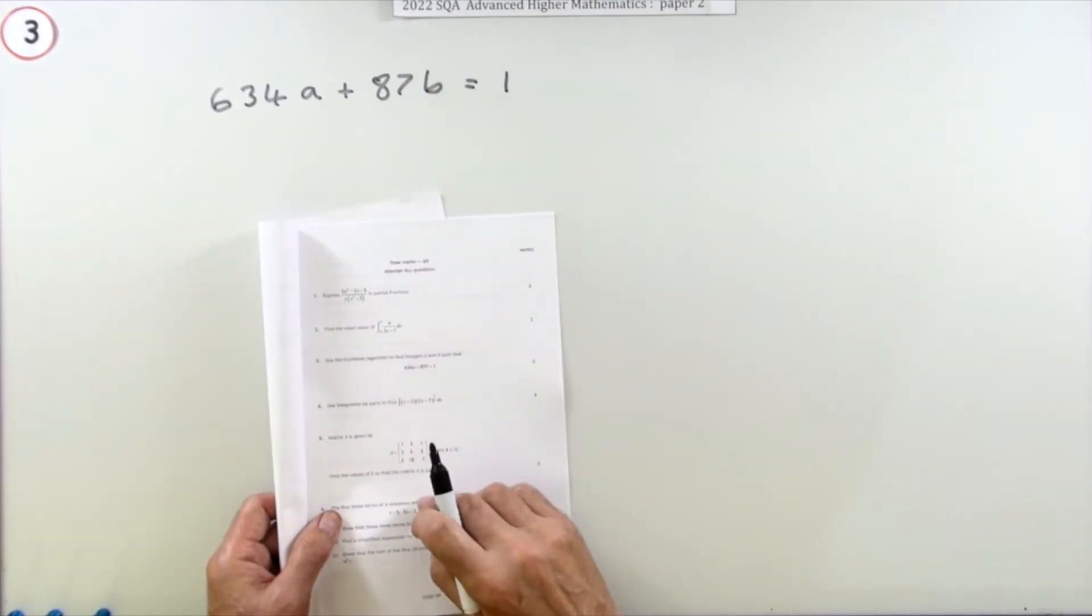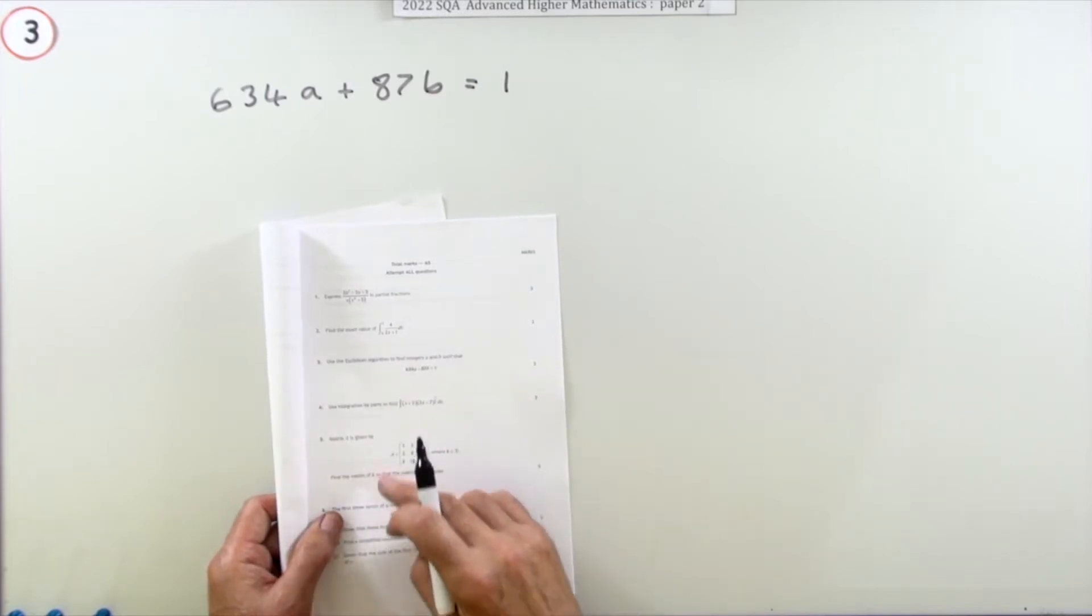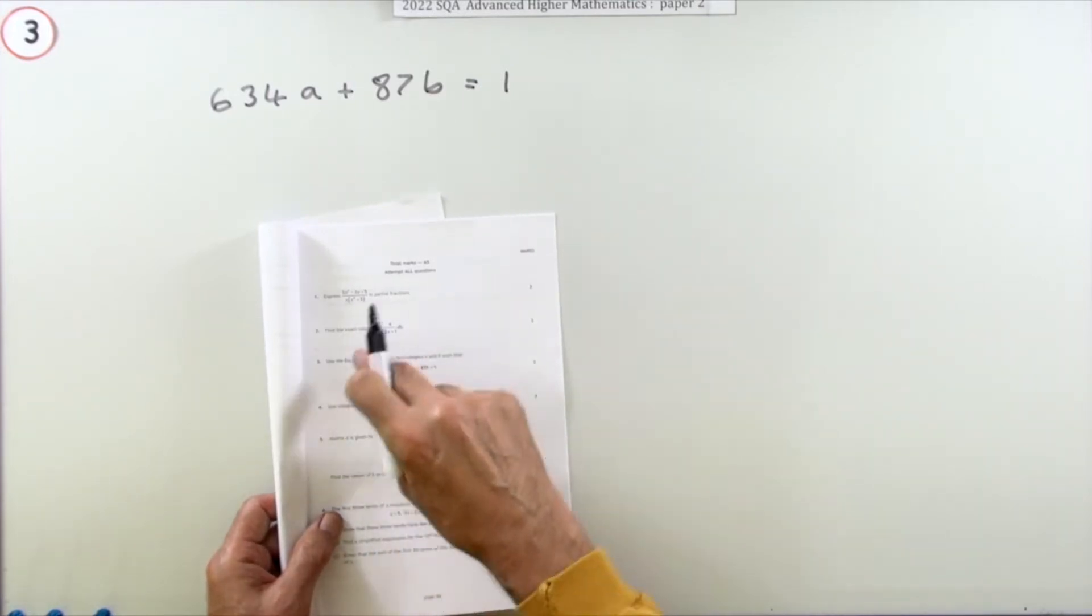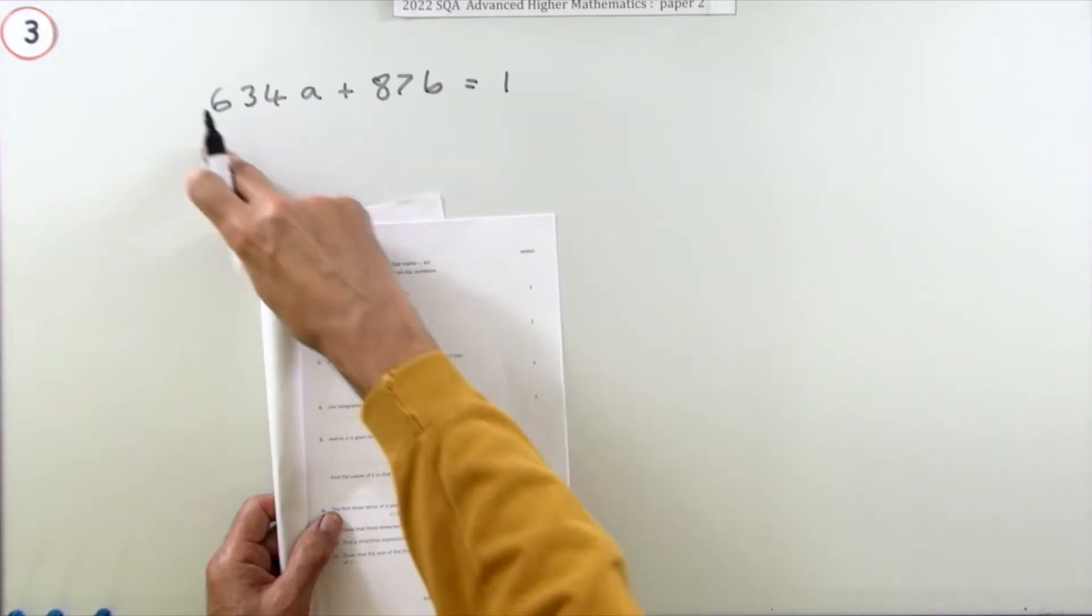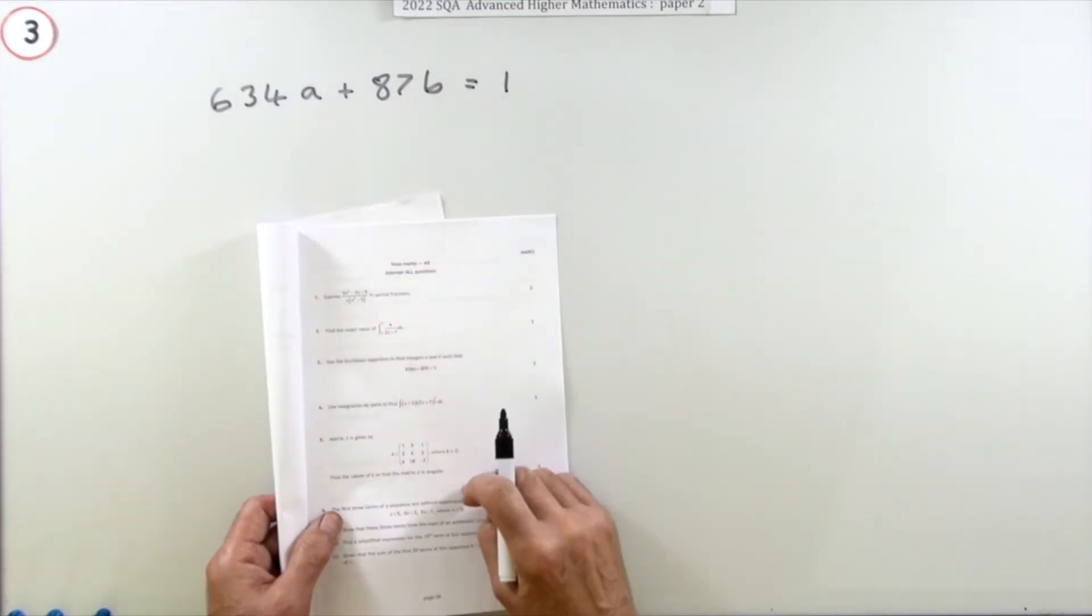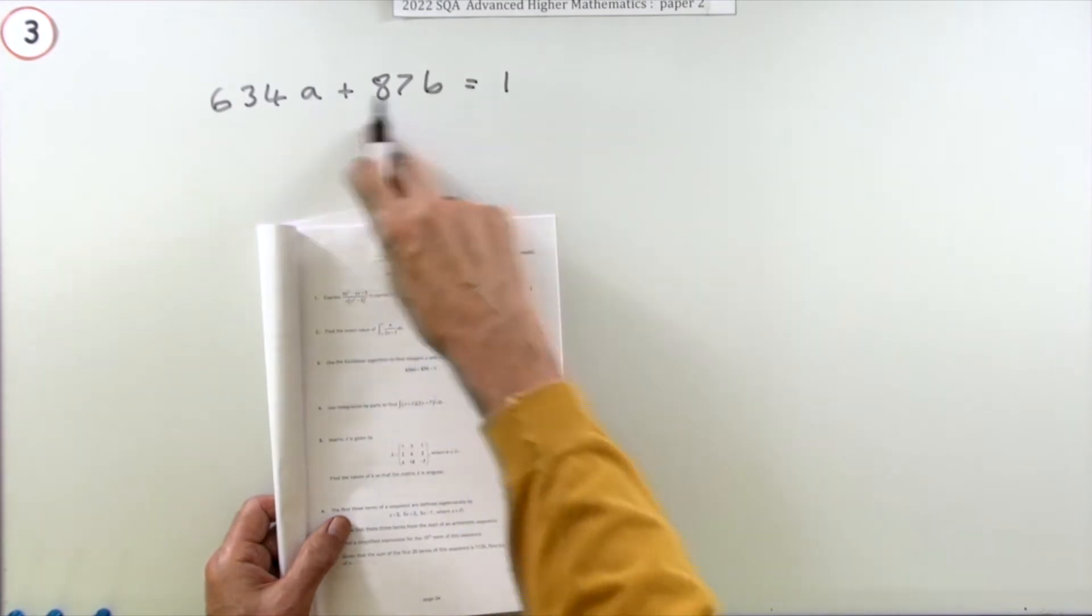Question three from the 2022 Advanced Higher paper, paper two, three marks. It's more than just the Euclidean algorithm. Use the Euclidean algorithm to find integers a and b to solve this Diophantine equation - that's an equation that requires integers as a solution.